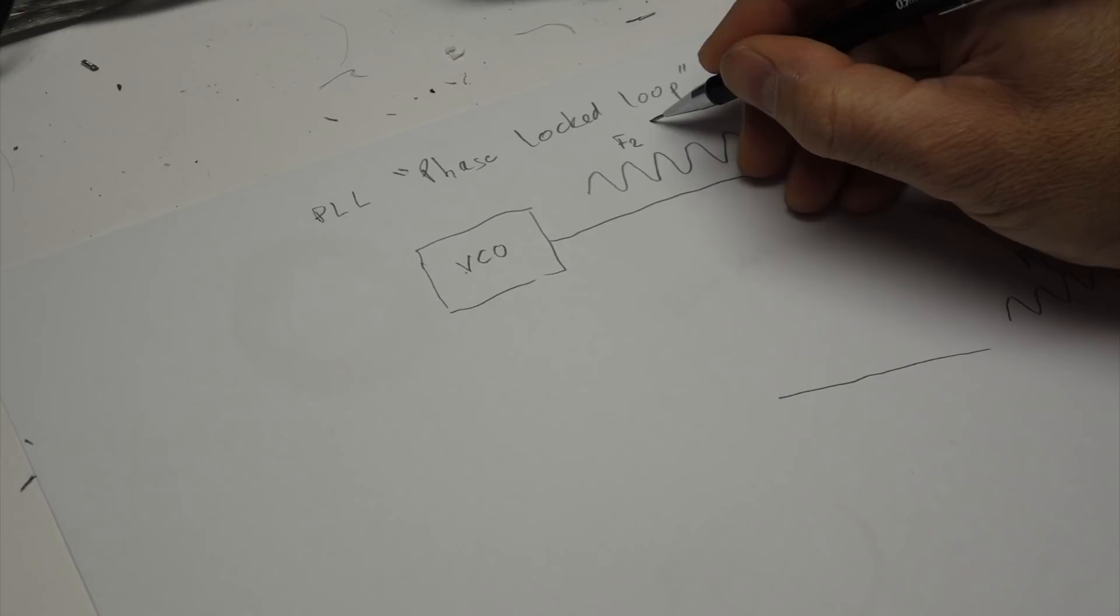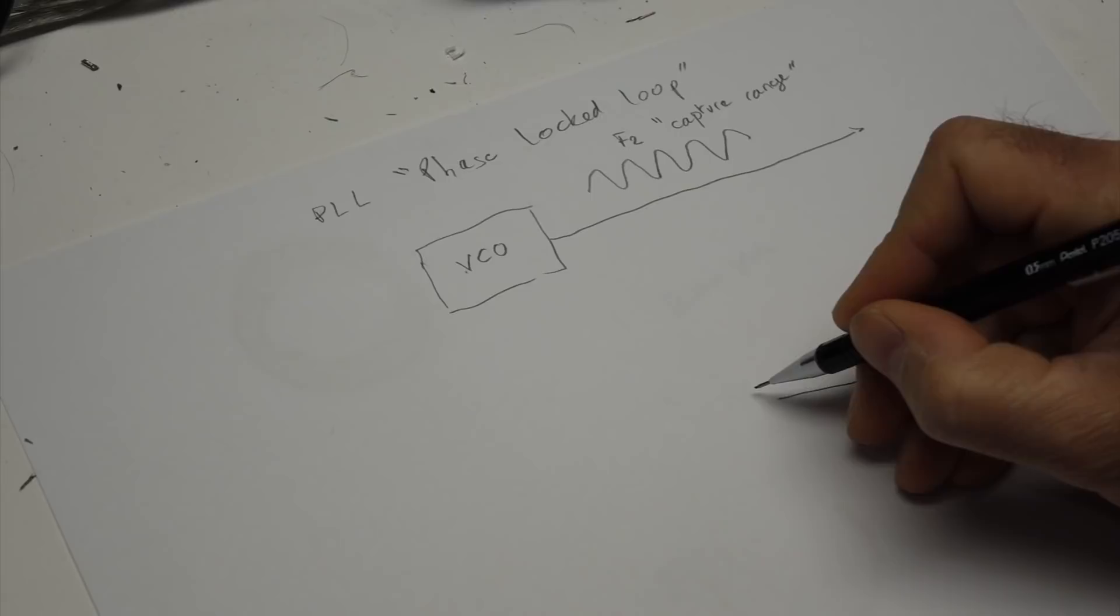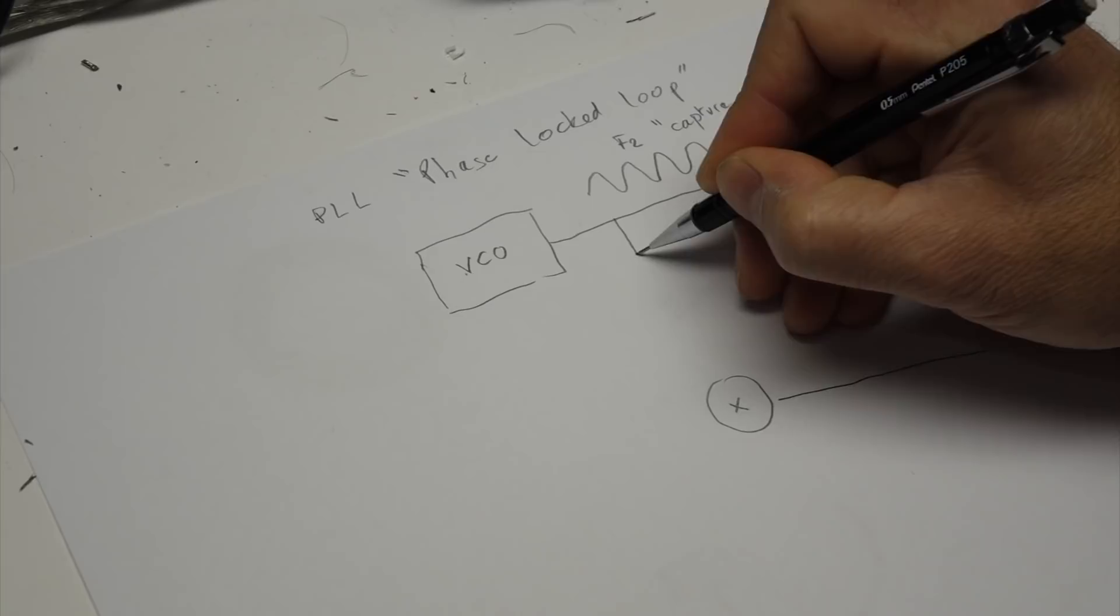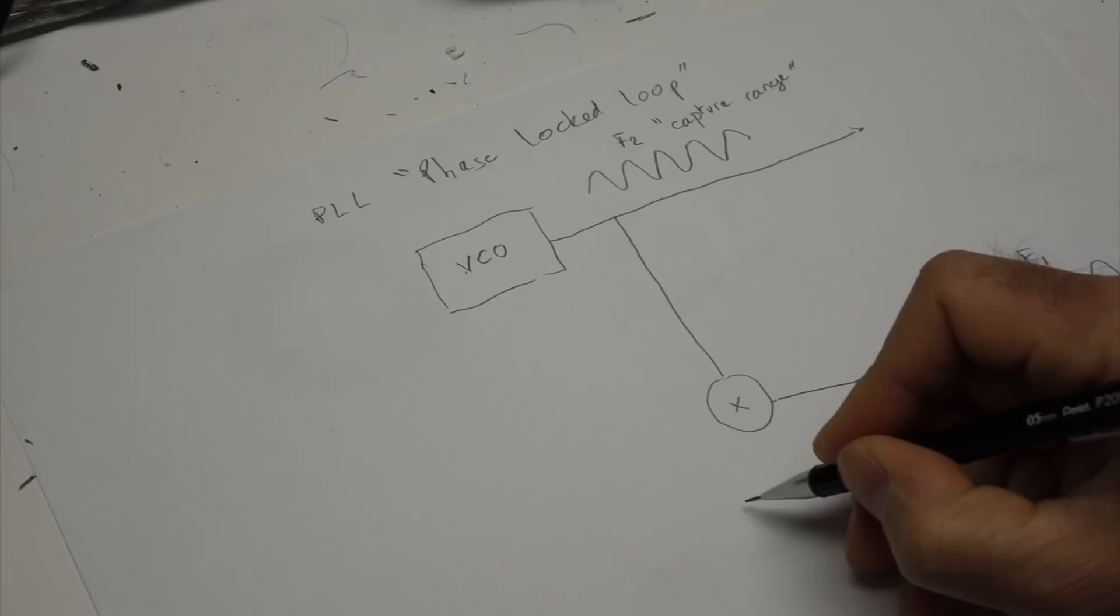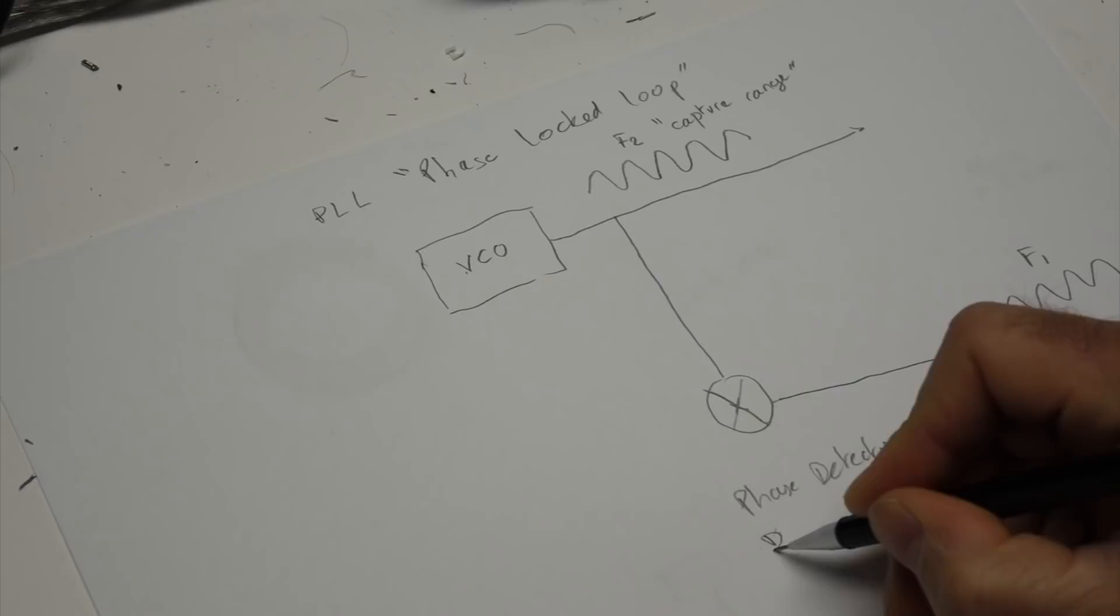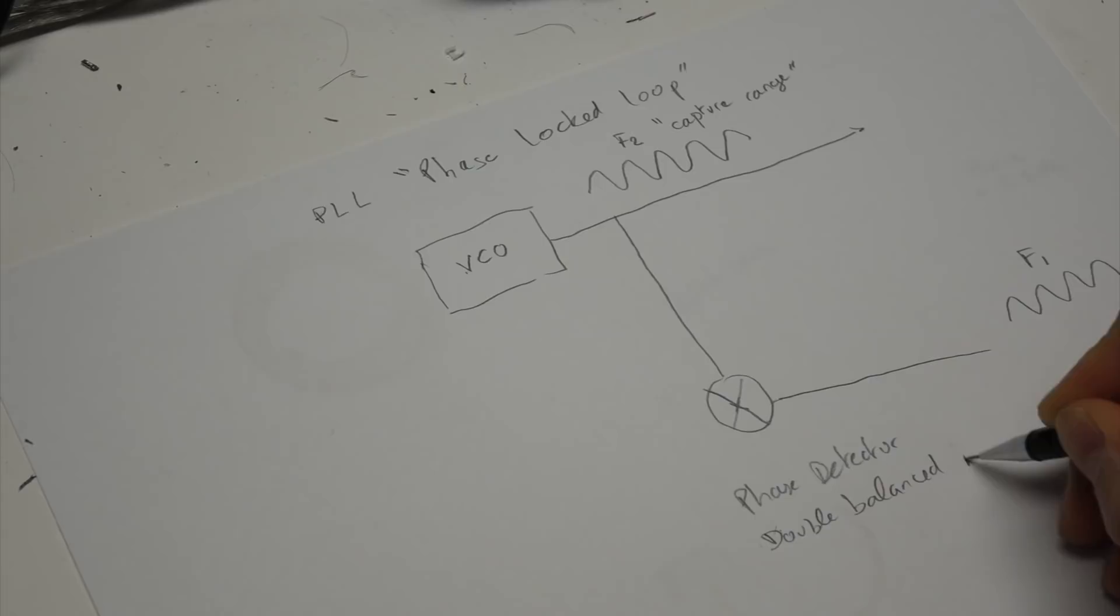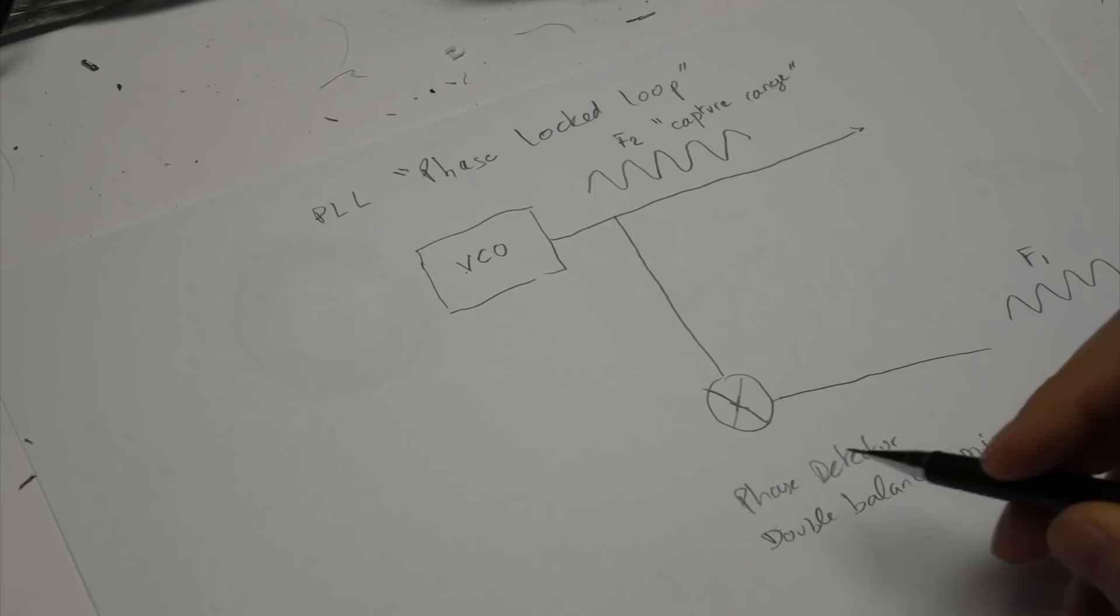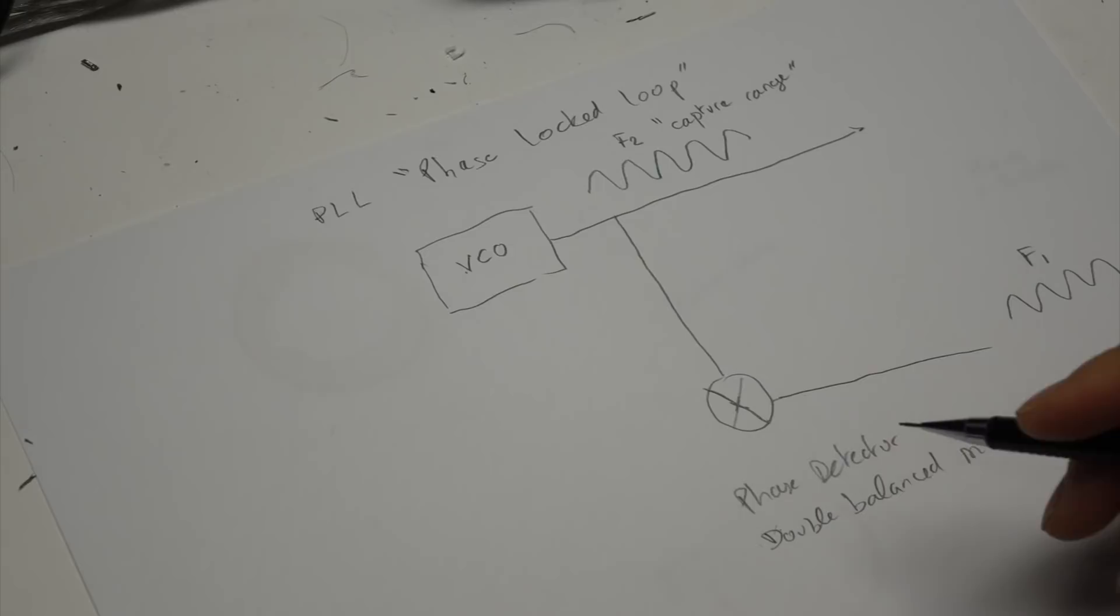So F2 has to be close to F1, it has to be within the capture range. And so what you would do is put F2 and F1 as the input of a phase detector, which in the olden days would just be a double-balanced mixer, which is a simple circuit that gives you either the frequency difference of the two, or when they are close to phase, it gives you the phase difference, which is exactly what we want. So it does two things at once.